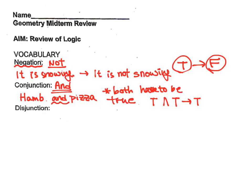Now on the other hand, disjunction. We can use the word OR in this case. So I can say, 'what would you like to have for lunch? Hamburger OR pizza.' Now in this case, if I get hamburger I'd be happy, if I get pizza I'd be happy, and if I get both I'd be happy.